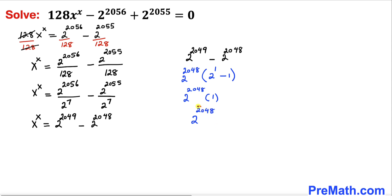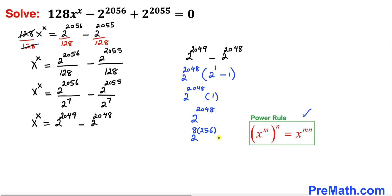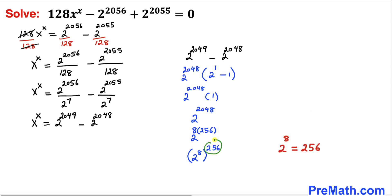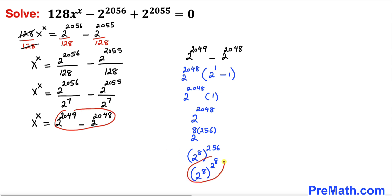Now let's focus on this exponent and tweak it. 2048 can be written as 2 power 8 times 256. Recalling the power rule of exponents, this means 2 power 2048 equals (2 power 8) whole power 256. And since 256 is the same as 2 power 8, this whole thing can be written as (2 power 8) whole power (2 power 8).